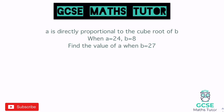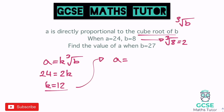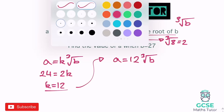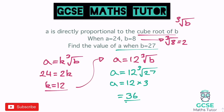Last direct proportion example: a is directly proportional to the cube root of b. We write a equals k times the cube root of b. Substituting a equals 24 and b equals 8: 24 equals k times the cube root of 8. The cube root of 8 is 2, so 24 equals 2k. Dividing by 2 gives k equals 12. Rewriting: a equals 12 times the cube root of b. When b equals 27, the cube root of 27 is 3, so a equals 12 times 3 equals 36.